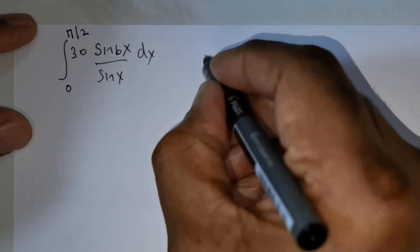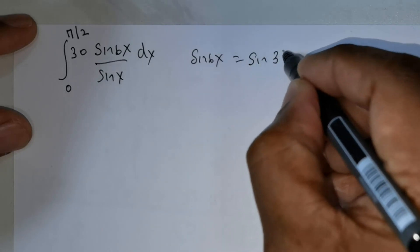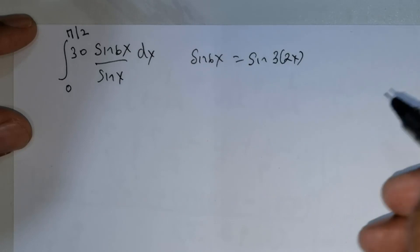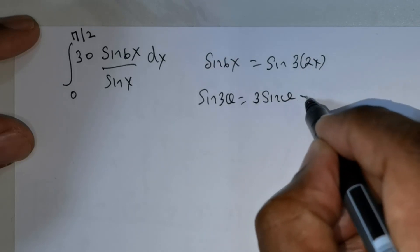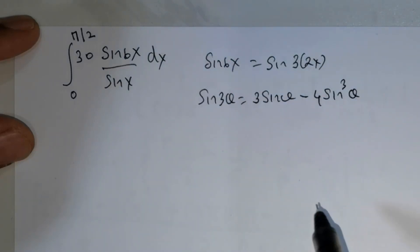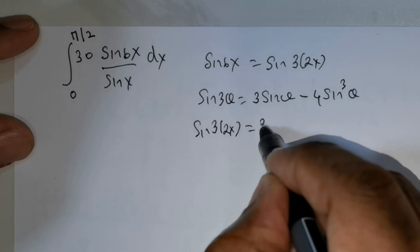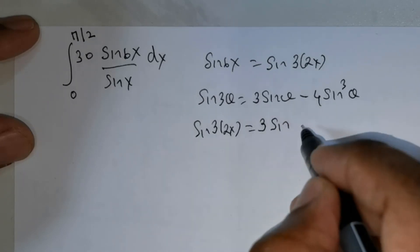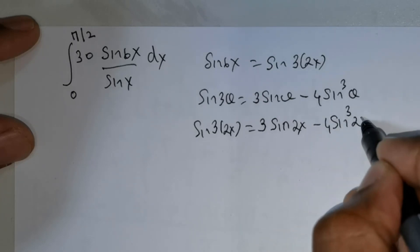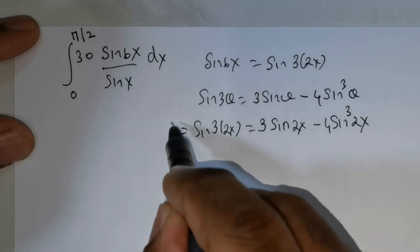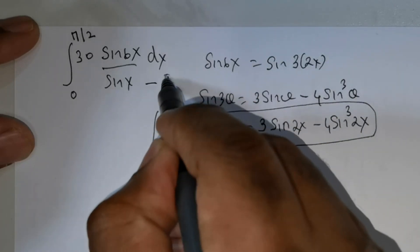The first thing I wish to do is rewrite sin 6x as sin of 3 times 2x. This is similar to sin 3 theta, which equals 3 times sin theta minus 4 times sin cubed theta. So sin of 3(2x) can be rewritten as 3 times sin 2x minus 4 times sin cubed 2x. This is the expression for sin 6x that we will substitute in.